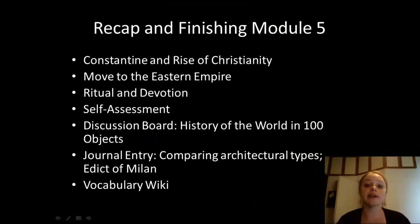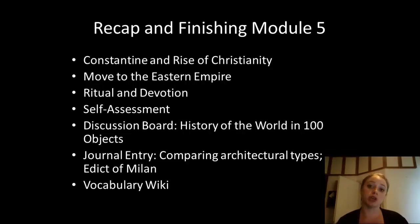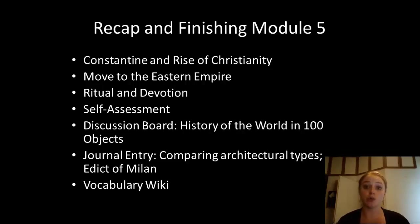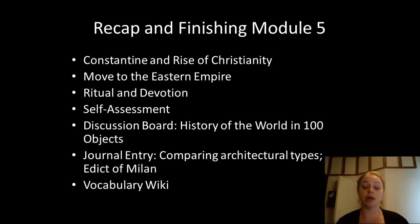To recap: we talked about Constantine and the rise of Christianity, especially after the Edict of Milan in 313 CE. We also saw the shift to the eastern empire — Constantine had major building projects in Constantinople, removing statues, obelisks, and columns from across the Roman Empire to make this new Christian capital his own. We also talked about the ritual and devotional aspects of these objects and spaces — images such as the Justinian mosaic or the icon were very active objects representing the emperor or the saint depicted.